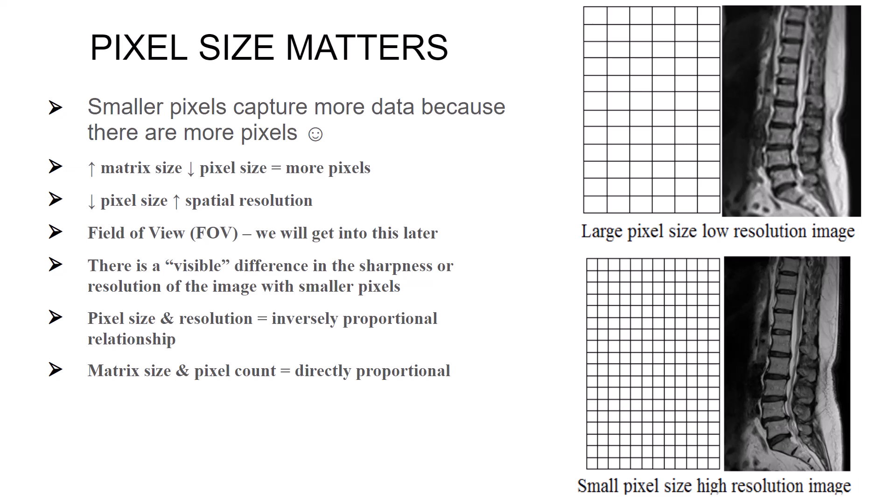Pixel size definitely matters. Smaller pixels mean there are more of them within the field of view, which also means the image captures more data because there are more pixels. As the matrix size increases, the pixel size decreases, meaning more pixels are present. A decrease in pixel size equals an increase in spatial resolution.